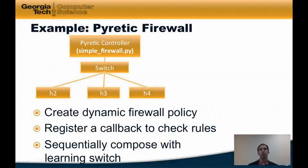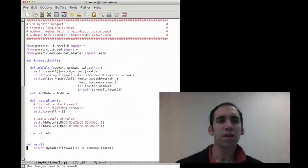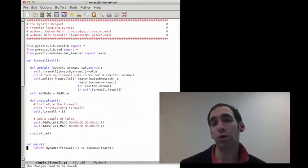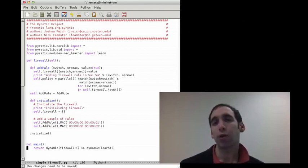Now let's return to our topology and instead run a controller that implements a firewall. Our firewall will behave just like our learning switch except it will first apply some firewall rules to block certain traffic before implementing the learning switch policy. We can implement the firewall by creating a dynamic firewall policy and then registering a callback on the stream of packets that checks the firewall rules, and then sequentially composing the resulting firewall policy with the learning switch policy. The firewall implementation in Pyretic is a whole lot simpler — instead of about 250 lines of code as with the POX controller, the equivalent function in Pyretic can be implemented in about 30 or 40 lines of code.